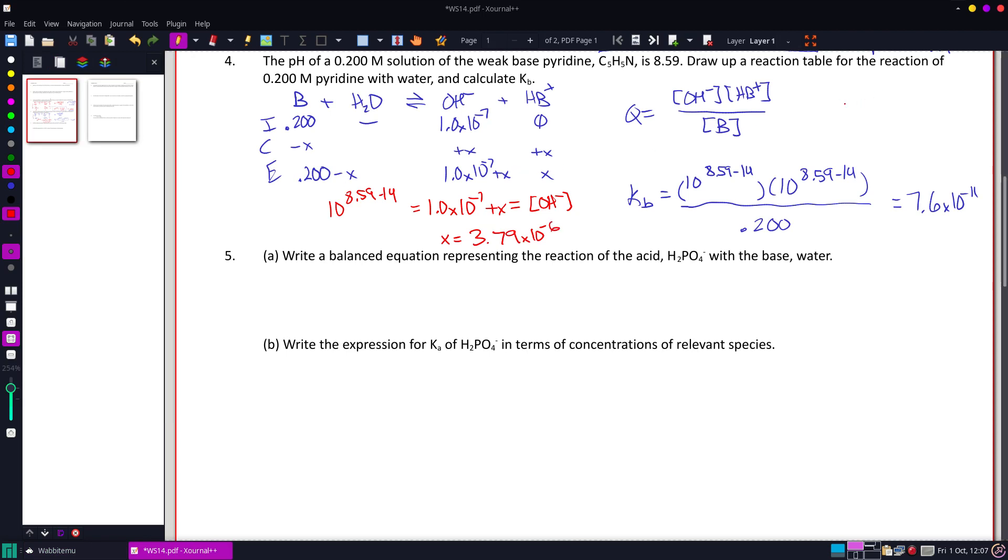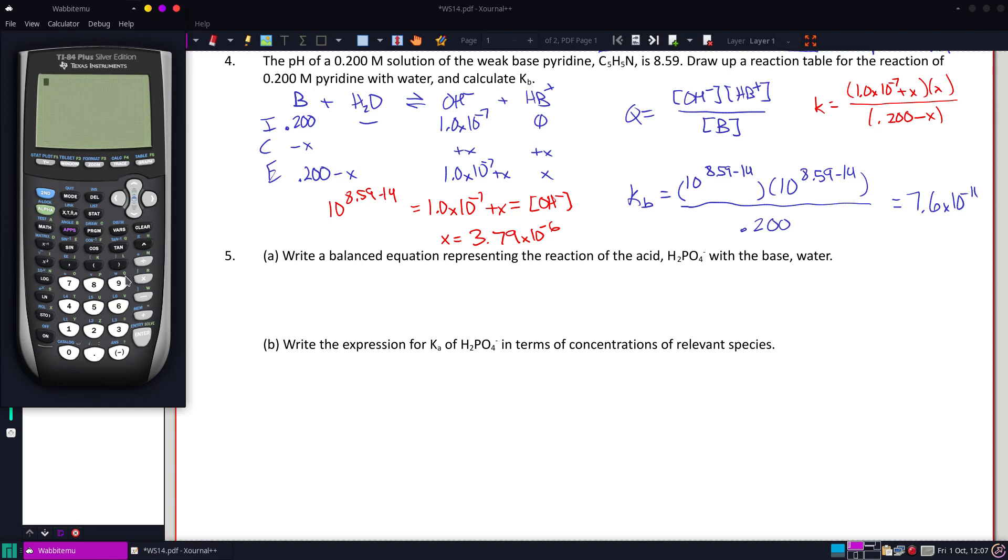All right, now I'm going to plug this in to the actual equation. So I'll have 1.0 times 10 to the negative 7th plus x and x all over 0.200 minus x, and I'm going to use this for my x every single time it pops up. So 1 times 10 to the negative 7th plus 3.79 times 10 to the negative 6th times 3.79 times 10 to the negative 6th divided by, in parentheses, 0.2 minus 3.79 times 10 to the negative 6th.